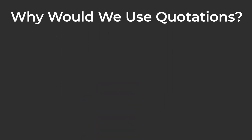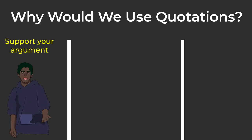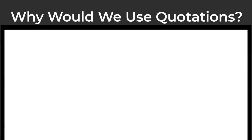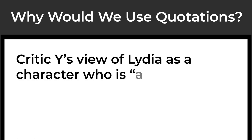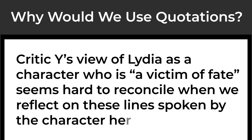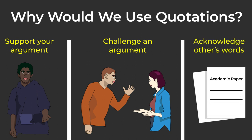Why would we use quotations? There are three primary reasons. First, to support your argument or a particular point you're making. Second, to challenge someone else's argument — for example, critic Y's view of Lydia as a character who is "a victim of fate" seems hard to reconcile when we reflect on these lines spoken by the character herself. Third, you can also use a quotation to acknowledge to your reader that the words you are using are not your own.